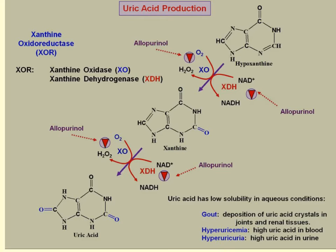Xanthine oxidoreductase actually catalyzes both steps and has two properties: it can oxidize or it can dehydrogenate. Which pathway it goes through depends on the levels of cellular NAD. If NAD levels are low, it performs two oxidation steps; if NAD levels are high, it performs two dehydrogenation steps.